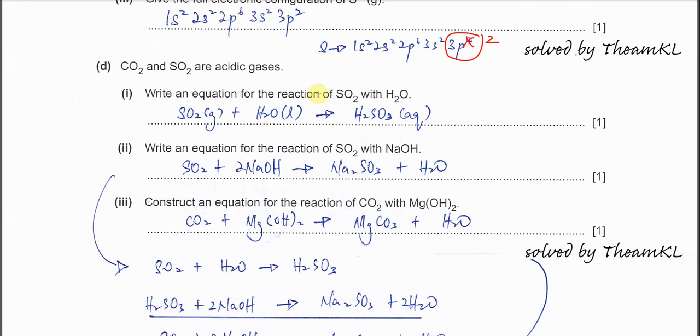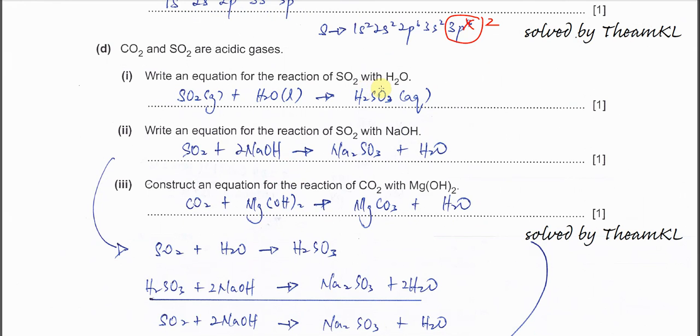Part D(i): Write an equation for the reaction of SO2 with water. This is straightforward: SO2(g) + H2O(l) → H2SO3(aq). This is what happens when sulfur dioxide dissolves in water and reacts.